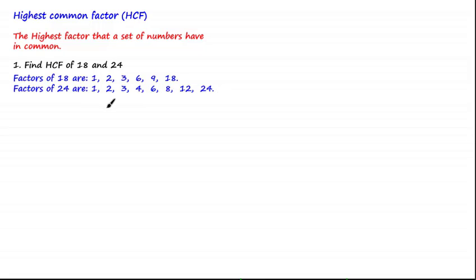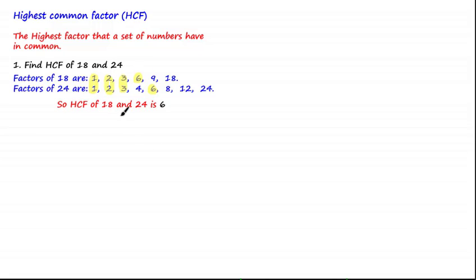You can always check this by multiplying one number by another number in the list and ensuring that it equals 24. You'll notice that there are several factors that 18 and 24 share in common, namely 1, 2, 3, and 6. However, as 6 is the highest common factor, it follows that the highest common factor of 18 and 24 is 6.